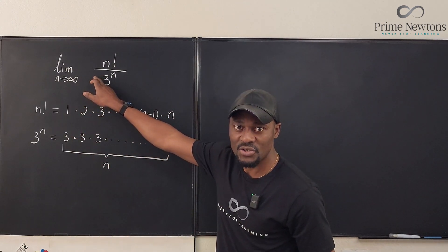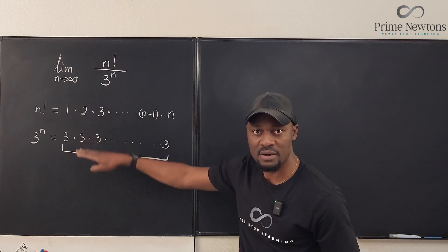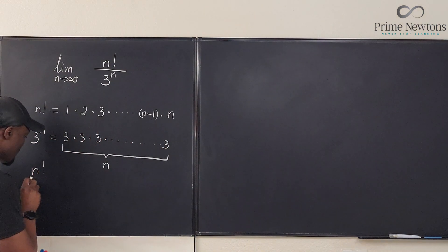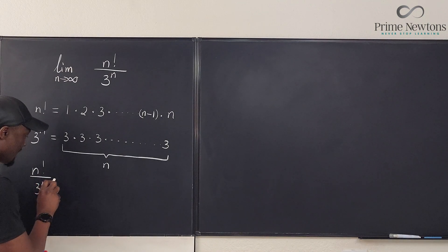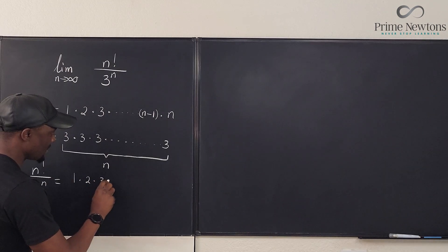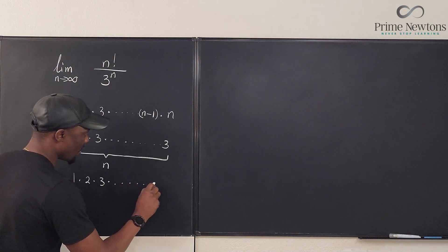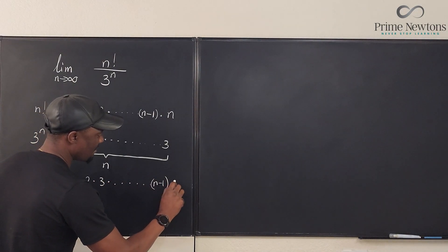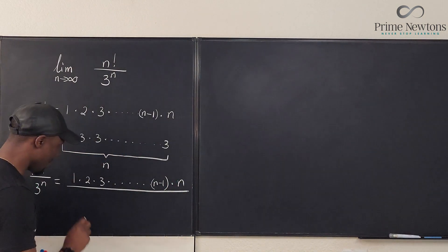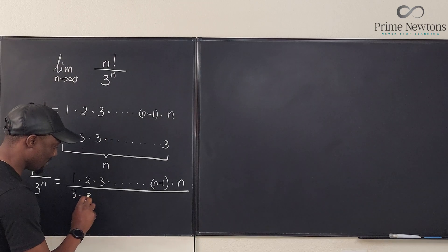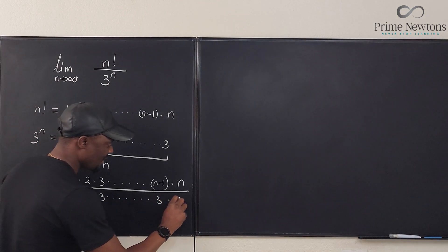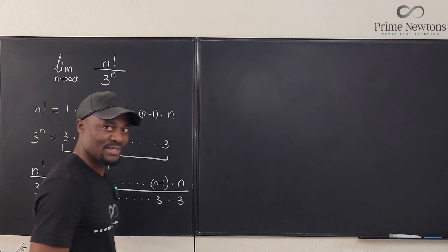So let's rewrite this fraction based on what we have shown here. It looks like n factorial divided by 3 to the n can be written as 1 times 2 times 3 times... we're going to go like that until we get to n minus 1 and then we have n. And under it, because it's multiplication, we can write 3 times 3 times 3... we get here we write 3, here we write 3. Everything looks nice.